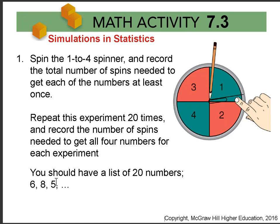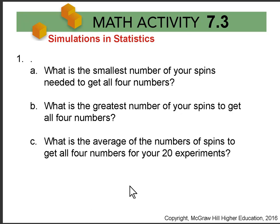You should have a list of 20 numbers, like 6, 8, 5, possibly more. Then answer some questions about your data: What is the smallest number of spins you needed to get all four numbers? What is the greatest number of spins you needed to get all four numbers? And what is the average number of spins across your 20 experiments?